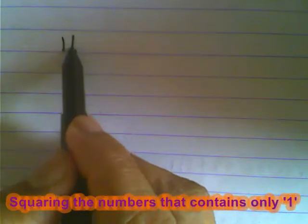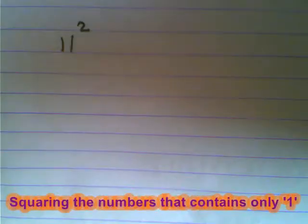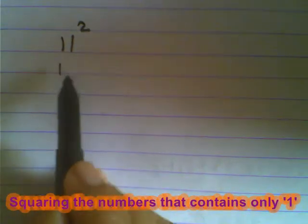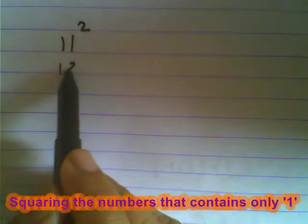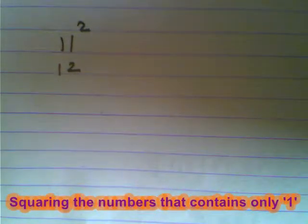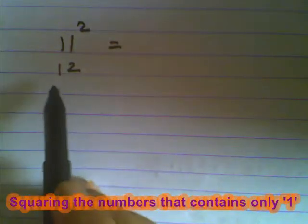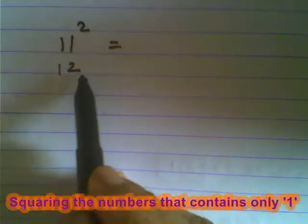Suppose we have to find the square of 11. It is very simple. Give the 10th place digit as number 1 and the unit place digit as number 2. Then to write the answer, simply count it as 1,